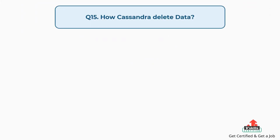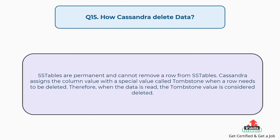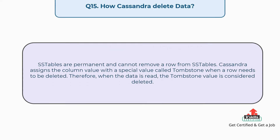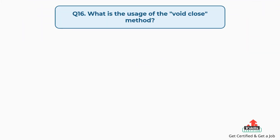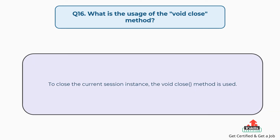Question number fifteen: How does Cassandra delete data? SS tables are permanent and cannot remove a row from SS tables. Cassandra assigns the column value with a special value called tombstone when a row needs to be deleted. Therefore, when the data is read, the tombstone value is considered deleted. Question number sixteen: What is the usage of the void close method? To close the current session instance, the void close method is used.